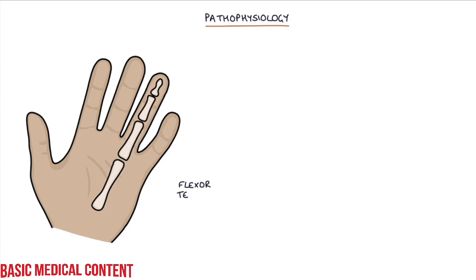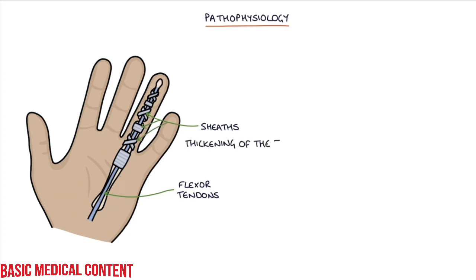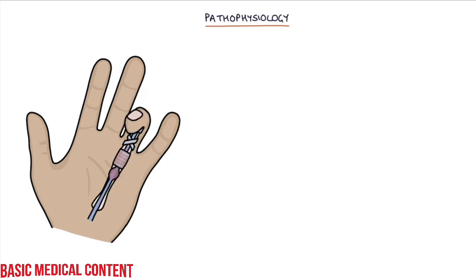Let's start with the pathophysiology. The flexor tendons of the fingers pass through several tunnels called sheaths along the length of the fingers. In trigger finger, there is a thickening of the tendon or a tightening of the sheath. This prevents the tendon from smoothly moving through the sheath when the finger is flexed and extended.